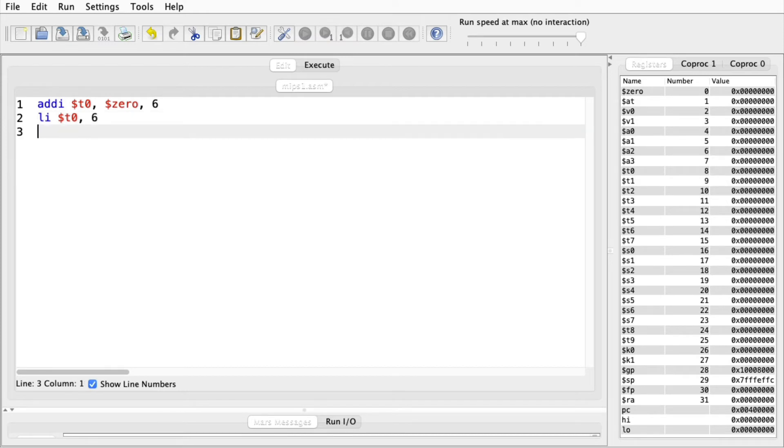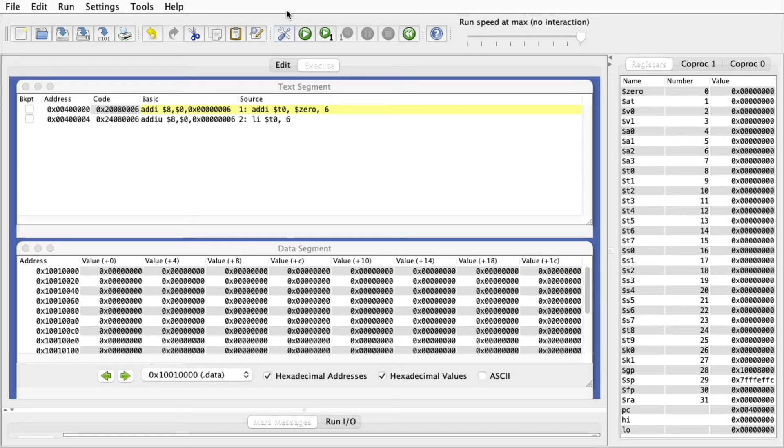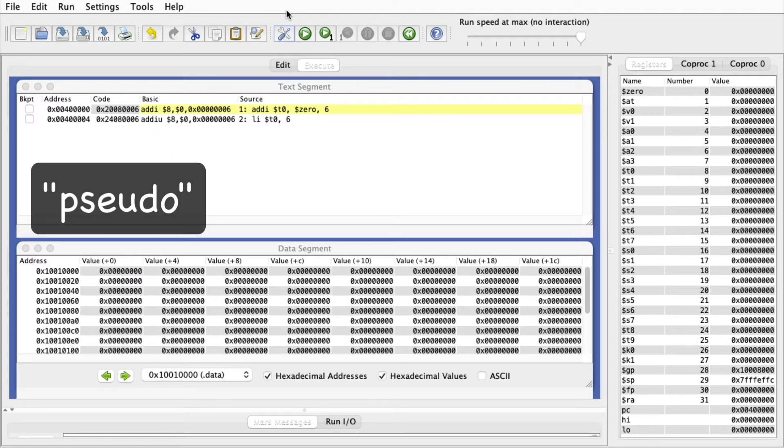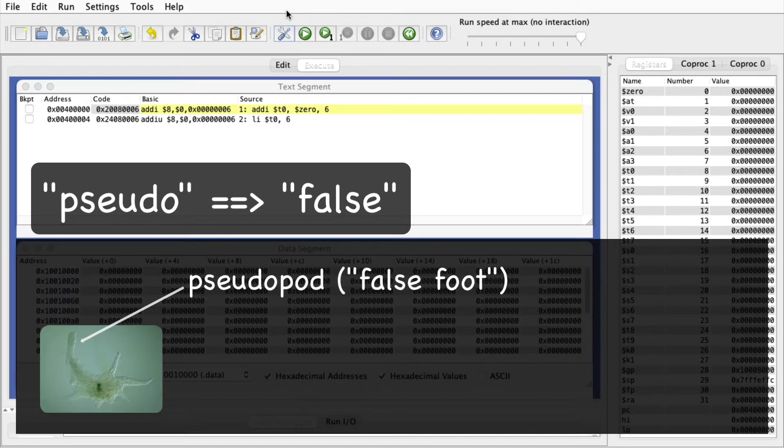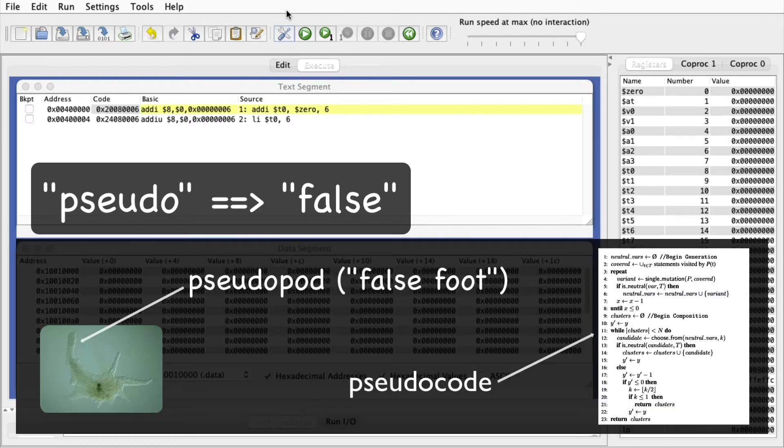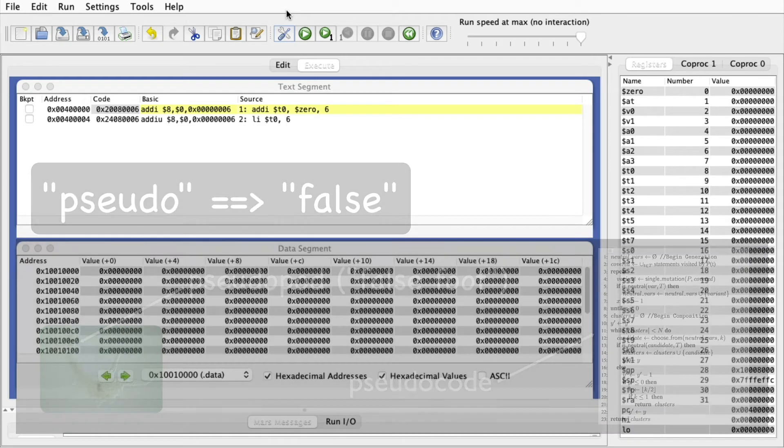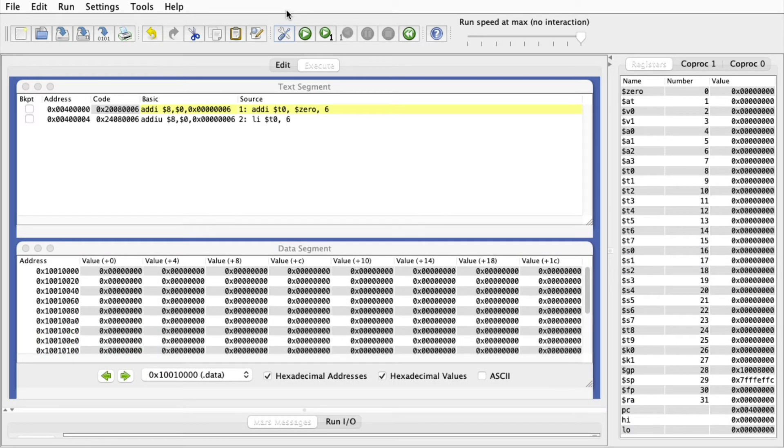Now, look what happens when I assemble the code. The load immediate instruction becomes an unsigned addEye. Remember that pseudo is Latin for false. Think of pseudopod in biology or pseudocode. LI is false in the sense that it doesn't represent an actual machine instruction. Instead, it's just a shortcut for entering the longer addEye instruction. MIPS provides many pseudo-instructions, and I'll point them out as we come across them.